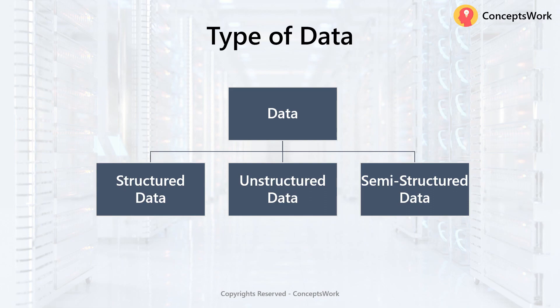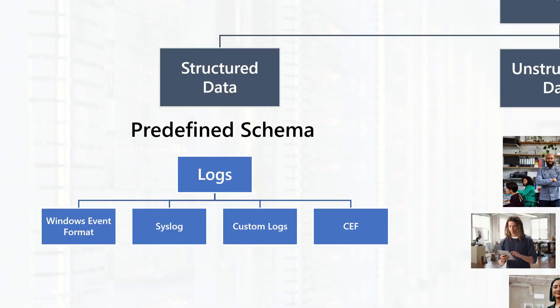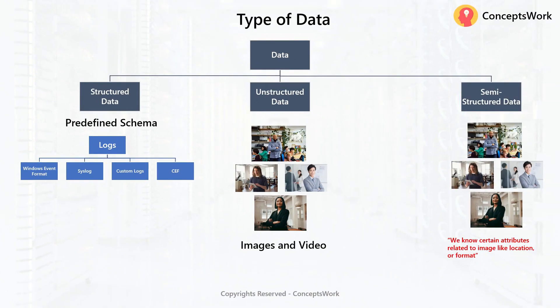When it comes to type of data, there are three different types that can exist. The very first one is structured data, then you have unstructured data, and then you have semi-structured data. When we talk about structured data, it's a kind of data where the schema is predefined — and precisely speaking, this will be all the logs that we will be capturing from different solutions altogether.